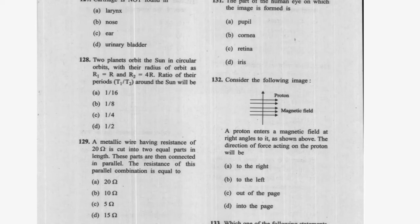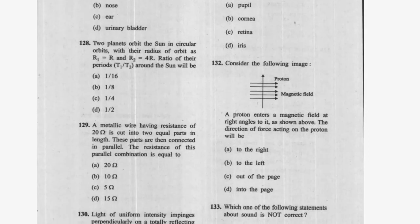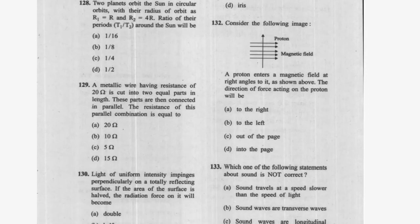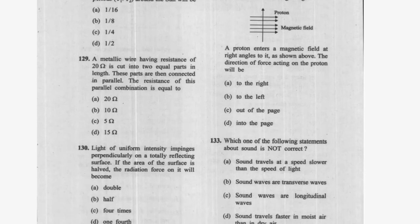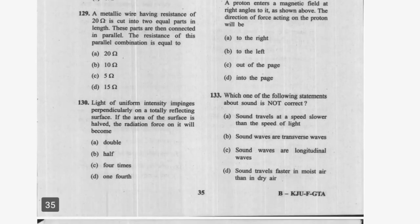Question 118: Two planets orbit the sun in circular orbits with radii R1 = R and R2 = 4R. The ratio of their periods T1 to T2 around the sun — on calculation option C is correct: 1:4. Question 119: A metallic wire of resistance 20 ohm is cut into two equal parts in length; these parts are connected in parallel. The resistance of this parallel combination is 5 ohm — option C.